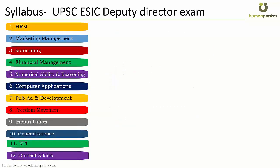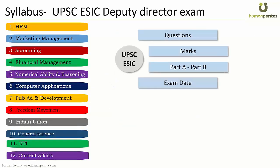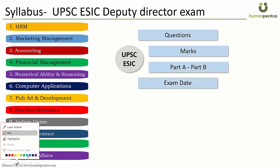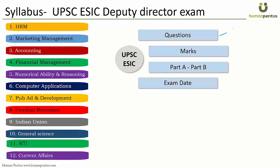About the ESIC exam: it will have 120 questions. The number of marks is around 300 or maybe 100 — what we know is that each question has equal marks and there is negative marking of one-third. Part A will have 20 questions and Part B will have the remaining 100 questions.